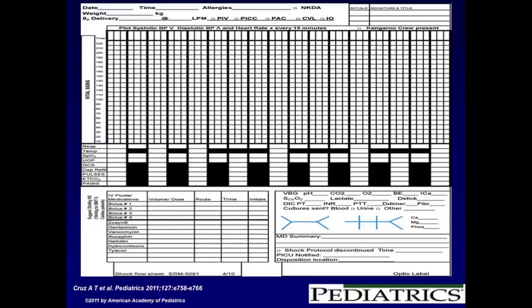This may be familiar to some. This is basically the same way that we track anesthesia during the OR. Here you can see you have vital signs. You have respiratory rate, temperature, O2SAT, urine output, Glasgow Coma Scale, capillary refill, pulses, and end-tidal CO2. We have IV fluid boluses, 1, 2, 3, 4. Zosyn, gentamicin, vancomycin, rocephin, nafcillin, hydrocortisone, Tylenol. And then we have the actual blood gases, VBG, pH, CO2, O2, base excess, SCVO2, lactate, D-stick, DIC, INR, PTT, MD summary. The time that the shock protocol was discontinued, the time that the PICU was notified, and then the disposition of the patient. For those of you who want to look at this article, this is a slide taken directly from the paper by A.T. Cruz and colleagues, so you can bring this up to get better insights.